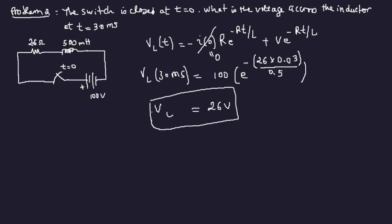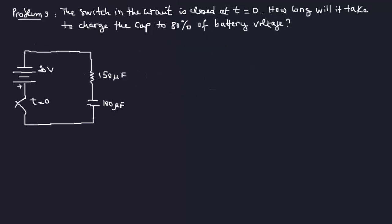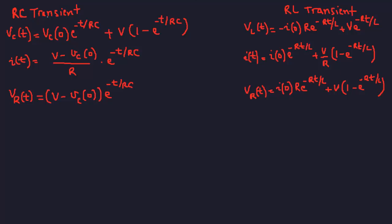The key thing to bear in mind here is recognizing that I(0) equals zero because it's an open circuit at t equals zero. Once we have that, the rest is straightforward — we just plug in the given values. Problem number three: the switch in the circuit is closed at t equals zero. How long will it take to charge the capacitor to 80% of the battery voltage? We're dealing with RC because there's a capacitor, so we use this formula.